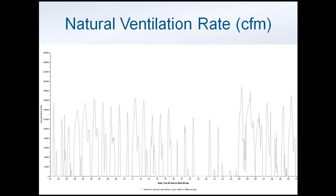Here is what the amount of air looks like for that same time period in June. When the strategy is on, we're getting ventilation rates of between 12,000 and 14,000 CFM.